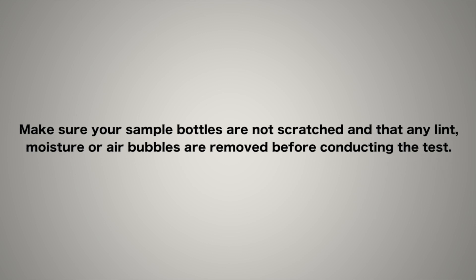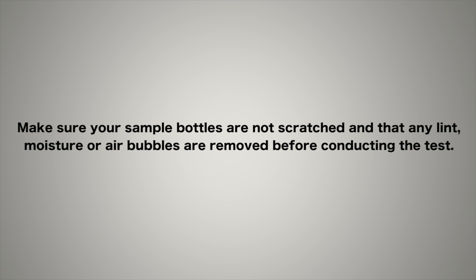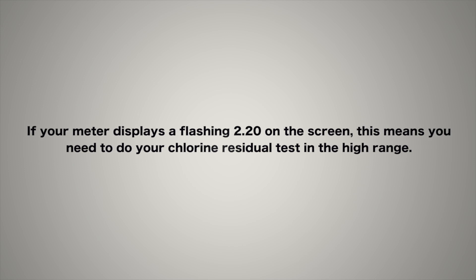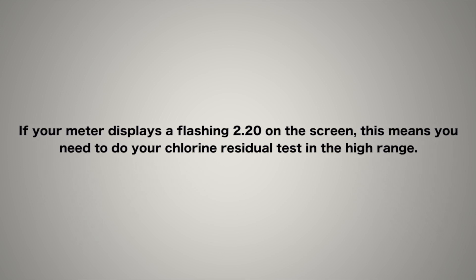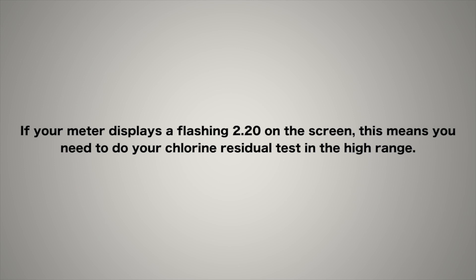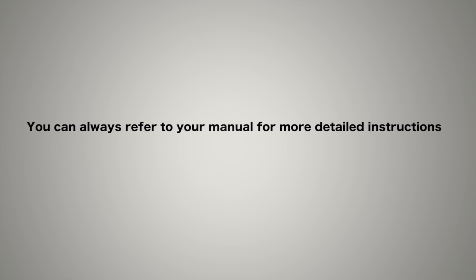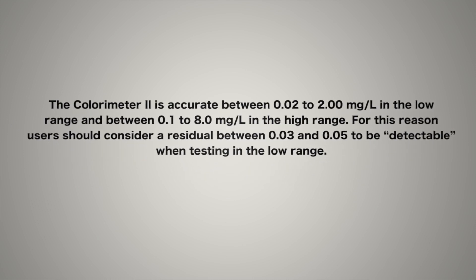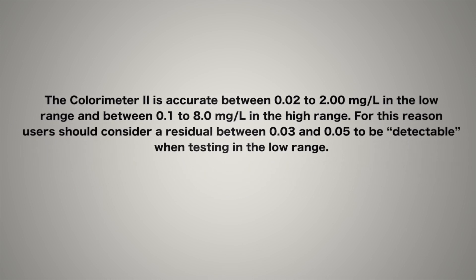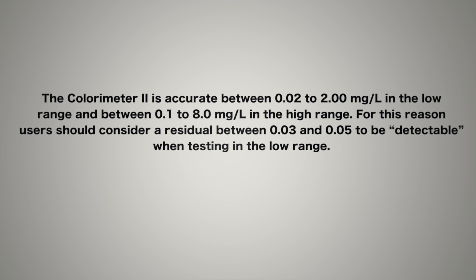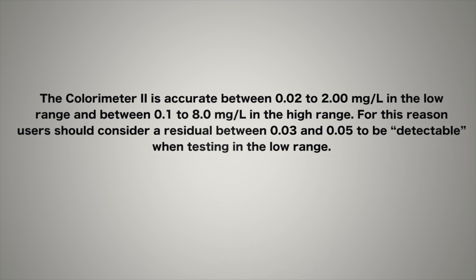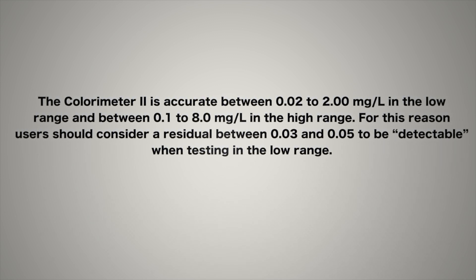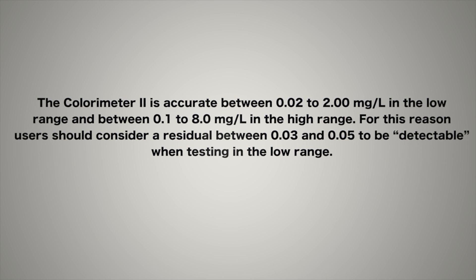For this reason, never use a colorimeter to test standing water for chlorine residual if not using the appropriate treatment for interference. If your meter displays a flashing 2.20 on the screen, this means you need to do your chlorine residual test in the high range. Refer to the instruction manual for specific details. You can always refer to your manual for more detailed instructions on how to conduct free and total residual tests in the low and high range. The kits will have an accuracy range. The Colorimeter 2 is accurate between 0.02 and 2.00 mg/L in the low range and between 0.1 and 8.0 mg/L in the high range. For this reason, users should consider a residual between 0.03 and 0.05 to be detectable when testing in the low range.